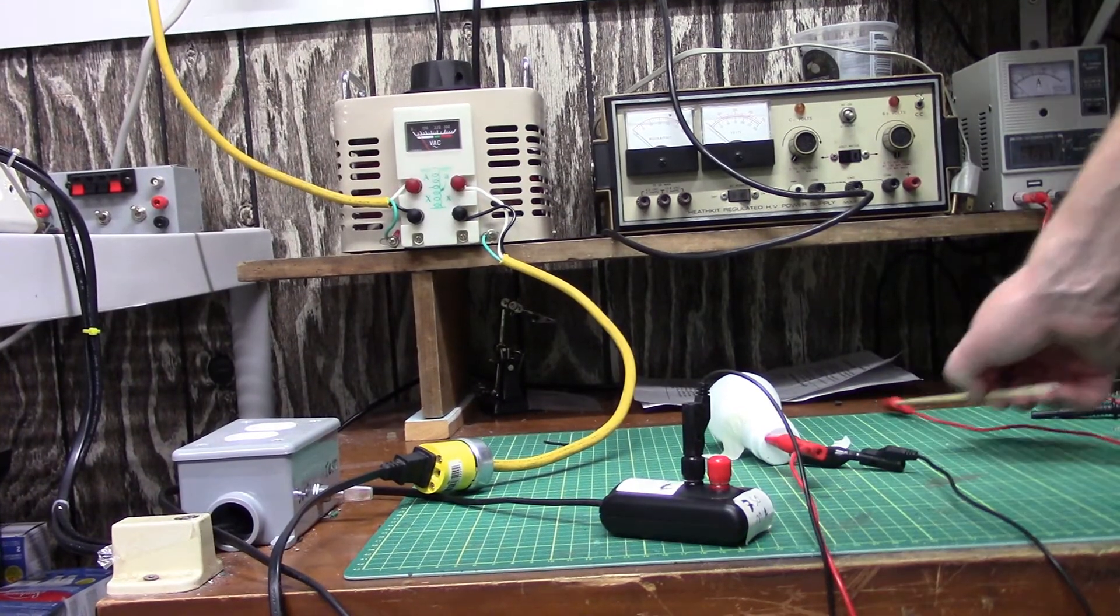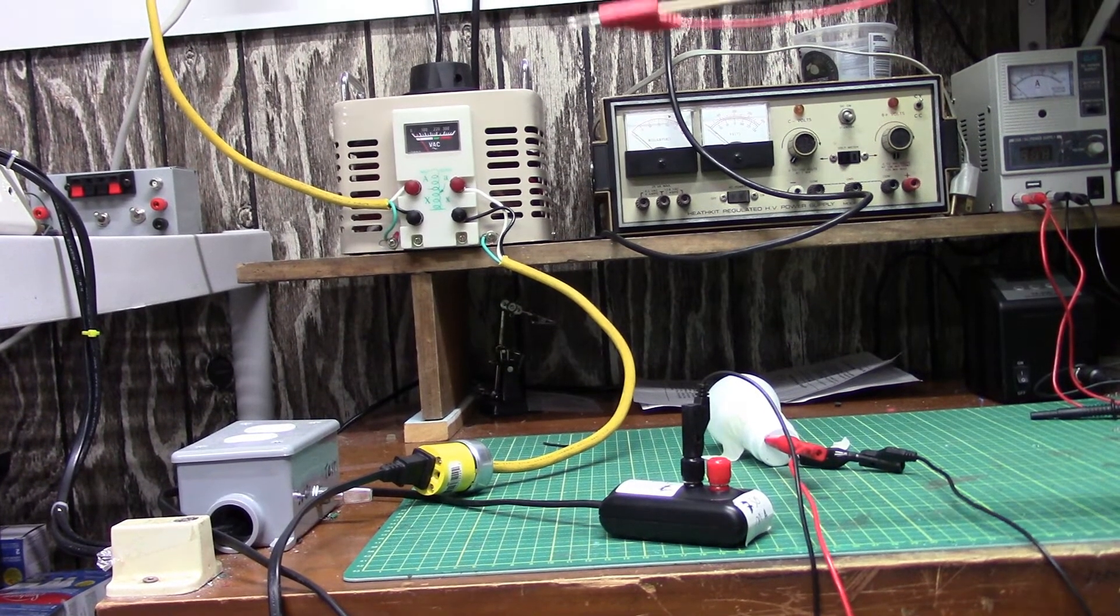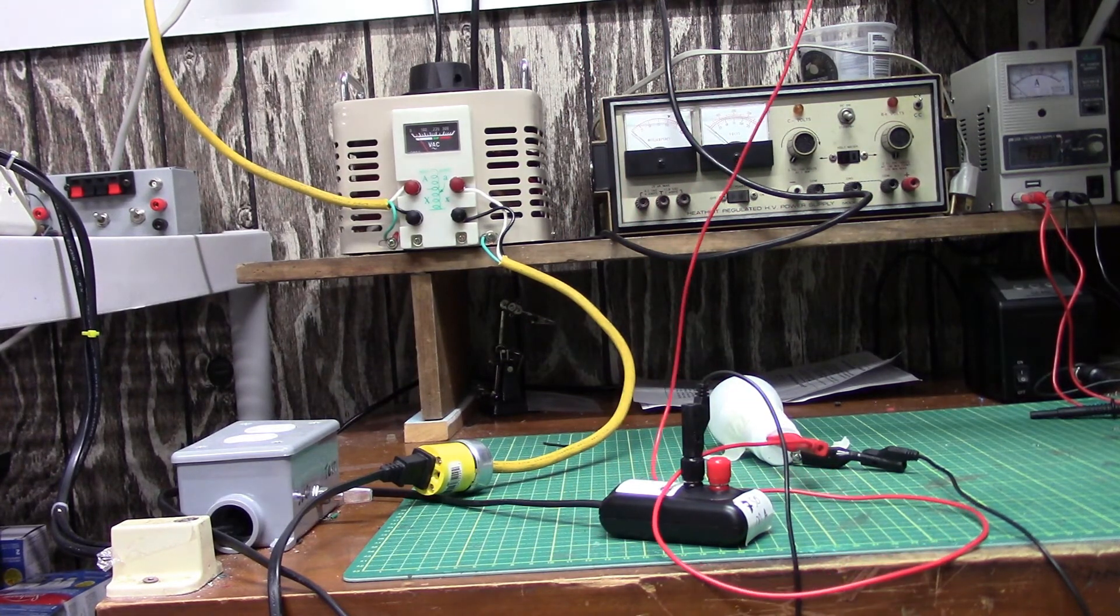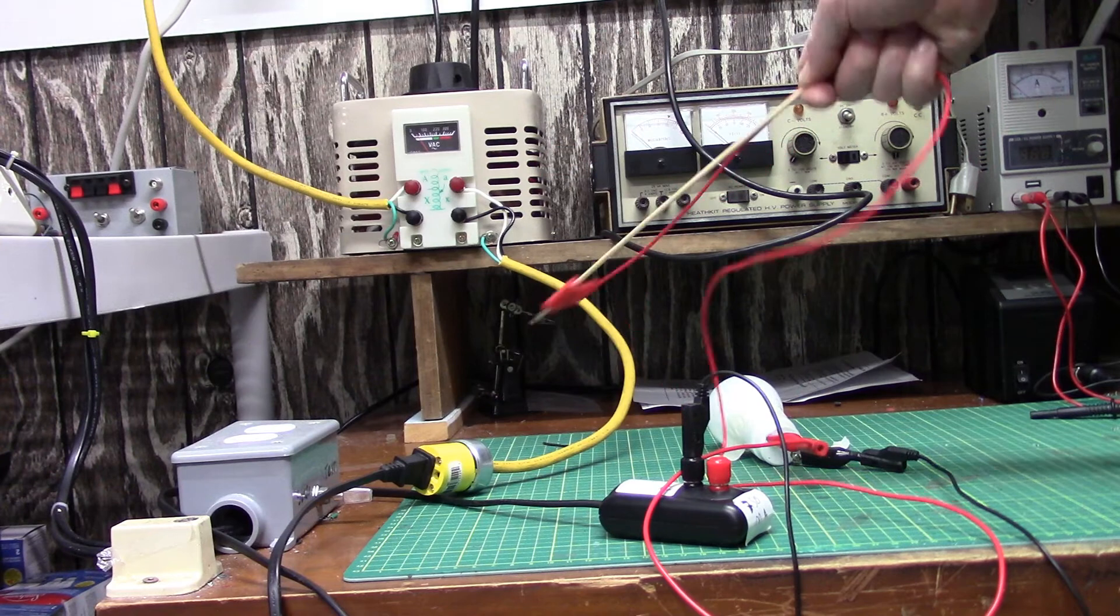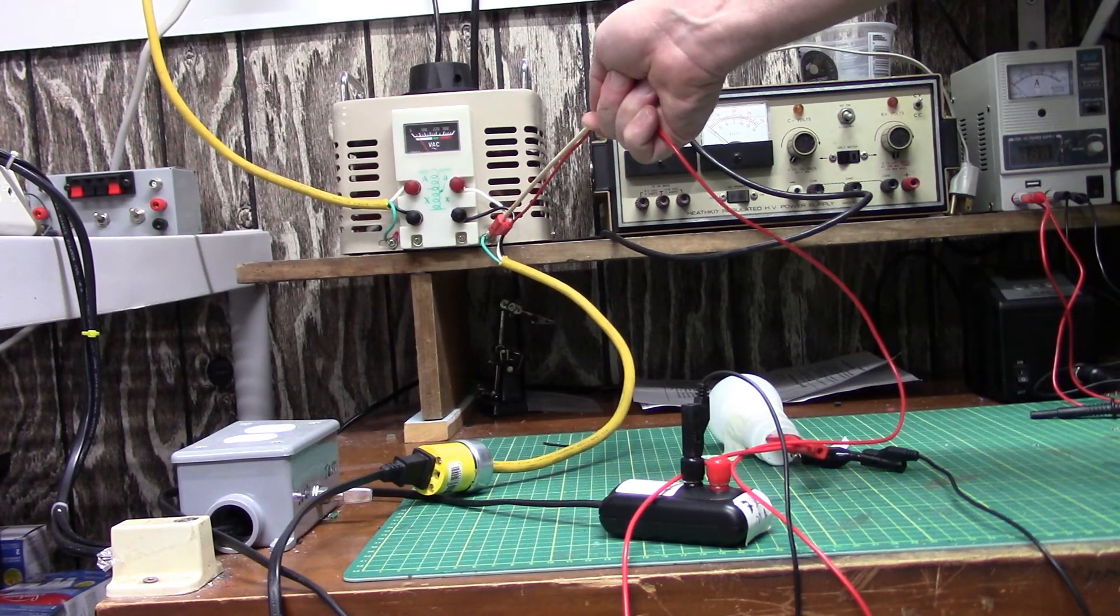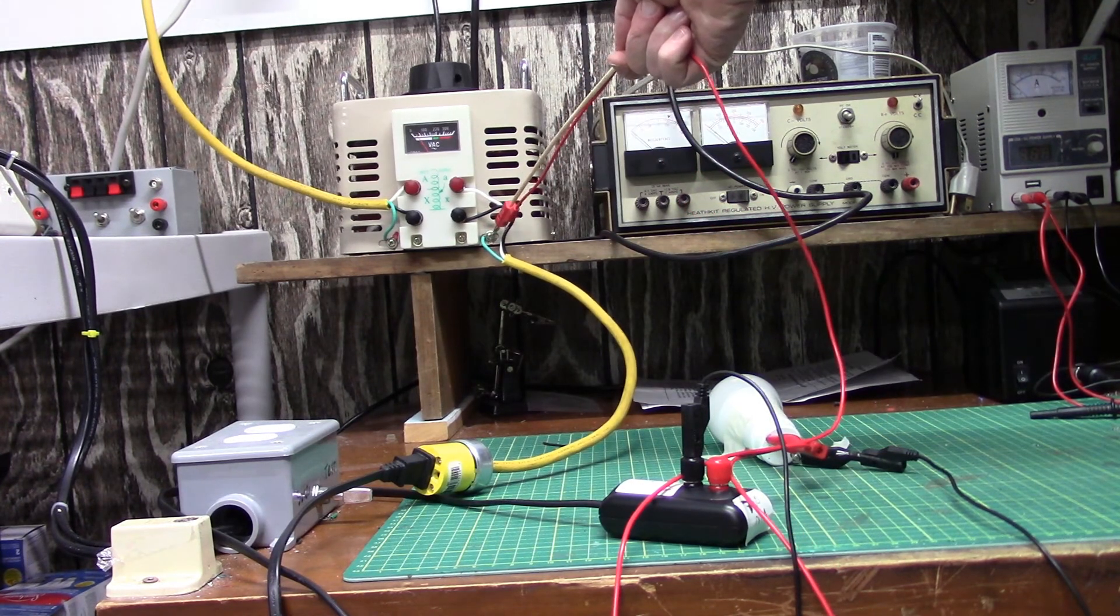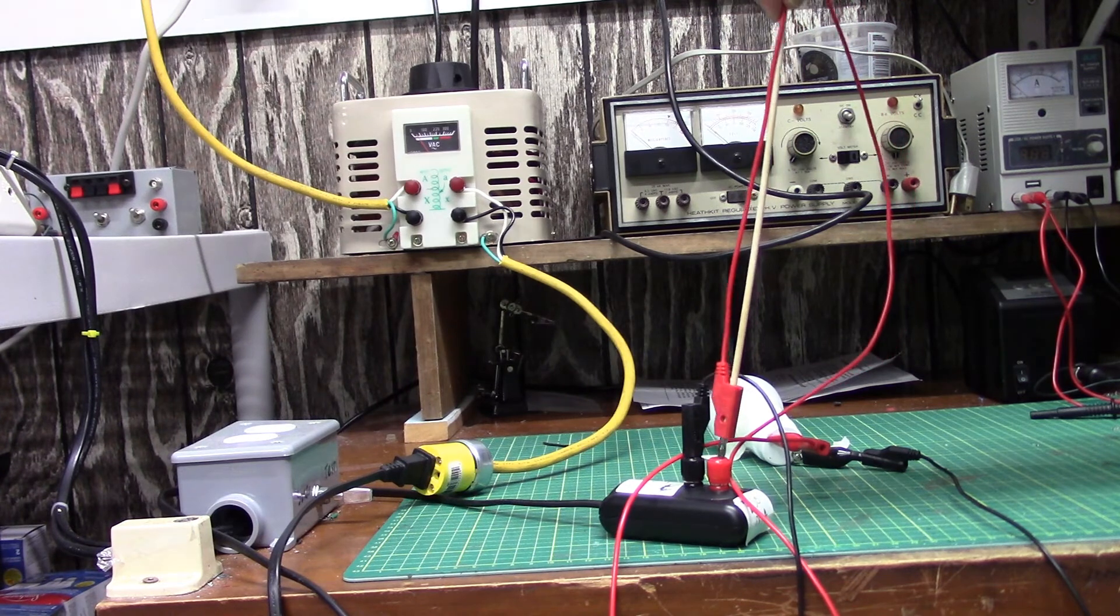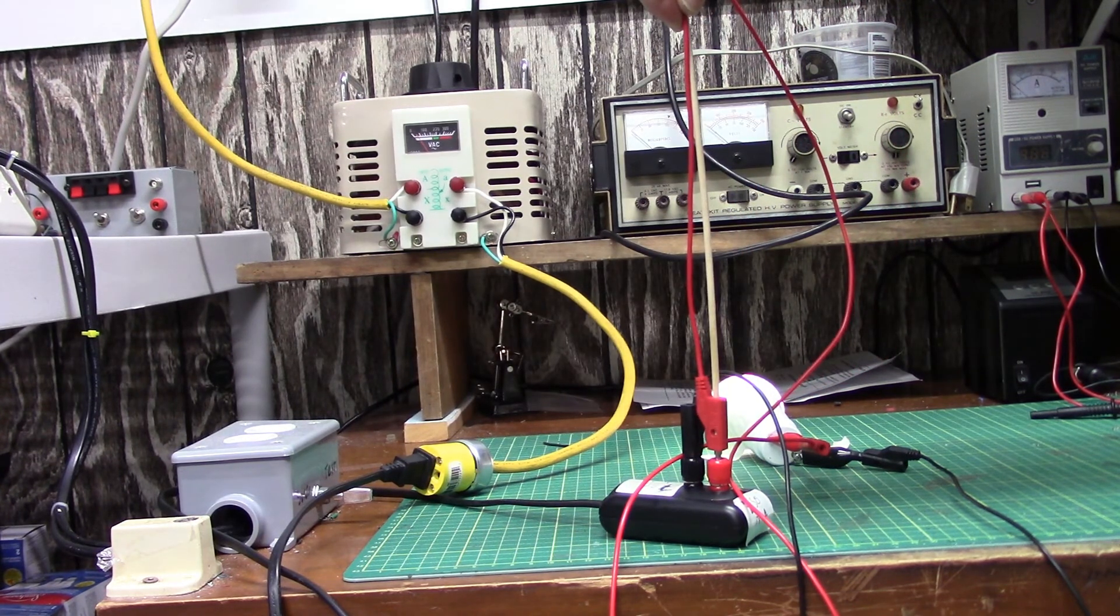Now this time, I've got the variac plugged directly into the isolation transformer coming out right into the plug. And if I touch that, I should get no light because I'm not grounded out. Still power here because if I go in here, I get 50 volts.